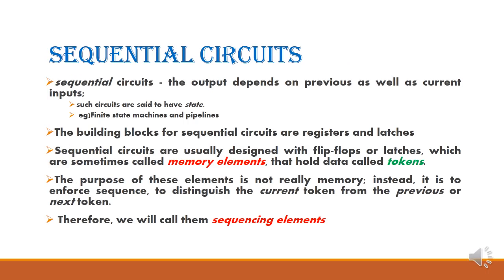Next, let us see what is a sequential circuit. A sequential circuit means the output depends on the present input as well as previous inputs. If it depends on the previous inputs, then it has memory. The best examples for sequential circuits are finite state machines and pipelines. Normally, these sequential circuits are built using latches, registers or flip-flops. These sequential circuits are sometimes called memory elements because they are able to store data, which is called tokens.